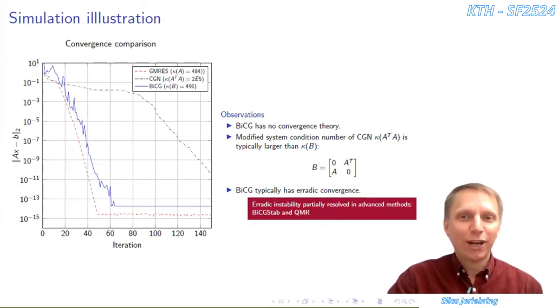CGN is also derived from CG, but with a different modified system matrix, namely A transpose A. The condition number of A transpose A is typically much larger than the condition number of the B matrix in this derivation. This can be seen as one of the justifications why BiCG performs much better than CGN in practice, although CGN is much better understood theoretically.